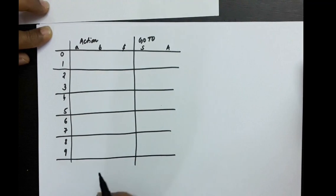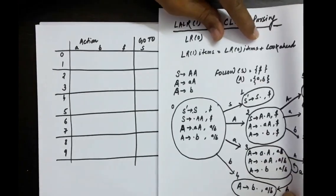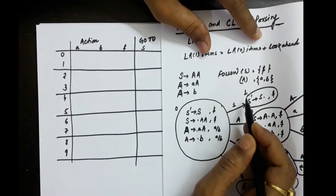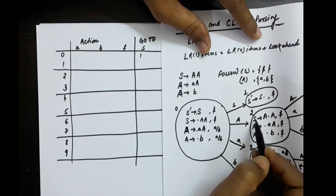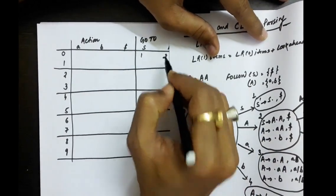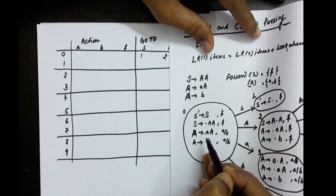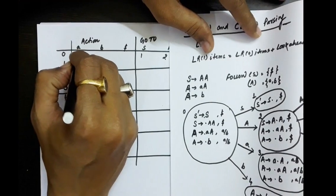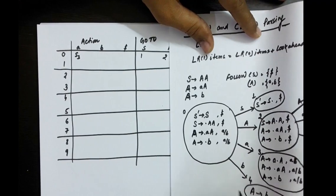Now, let us make entries to this table according to this canonical collection of items. From state 0 with capital S, we are going to 1. From 0 with capital A, we are going to 2. Then 0 with small a, you are going to state 3. S3. And 0 with small b, you go to state 4.